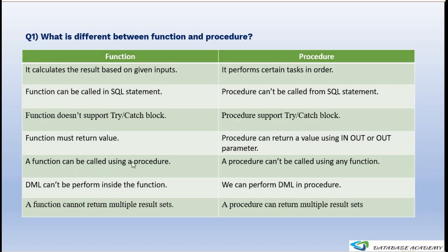The fifth difference is that a function can be called using a procedure, but a procedure cannot be called using a function. Also, DML operations like insert, update, and delete cannot be performed inside a function, but can be performed in a procedure. Finally, a function cannot return multiple result sets — it always returns a single value — while a procedure can return multiple result sets using multiple OUT parameters.